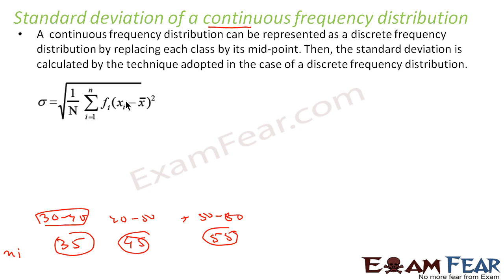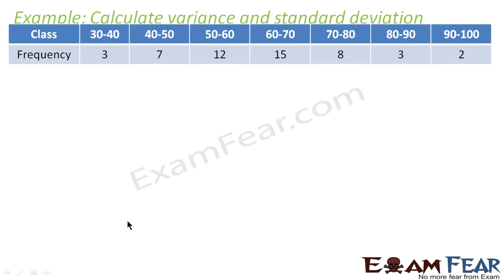The formula is 1 by n into fi times xi minus mean squared. That's the variance, which is root mean square deviation. n is nothing but the sum of frequencies sigma fi, and mean is sigma fi xi divided by n. We have to find variance and standard deviation. First, we need to find the mean.